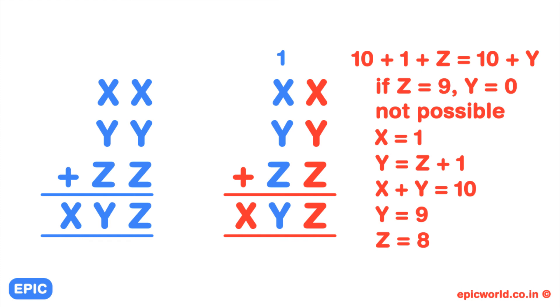Hence the digits 1, 9, and 8 correspond to the letters X, Y, and Z, and the equation will be 11 plus 99 plus 88 equals 198.